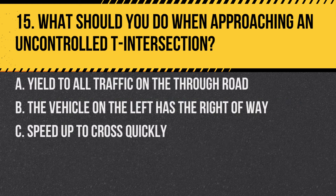Question 15. What should you do when approaching an uncontrolled T-intersection? A. Yield to all traffic on the through road. B. The vehicle on the left has the right of way. C. Speed up to cross quickly. Answer: A. Yield to all traffic on the through road. At an uncontrolled T-intersection, traffic on the terminating road must yield.